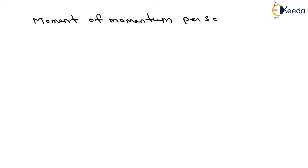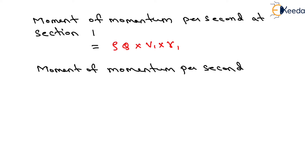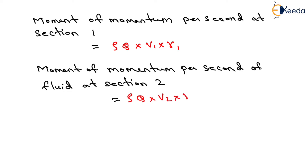According to the Moment of Momentum Principle, the moment of momentum per second at section 1 will be equal to Rho into Q into V1 into R1. Similarly, the moment of momentum of fluid at section 2 will be equal to Rho into Q into V2 into R2.